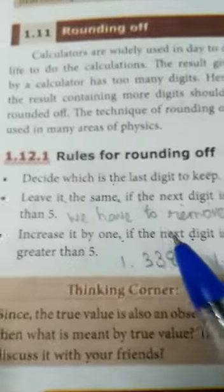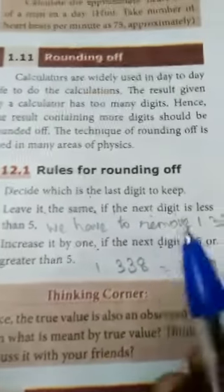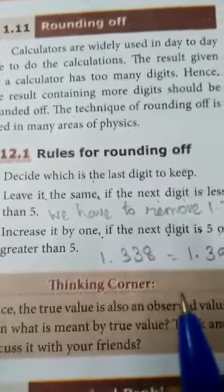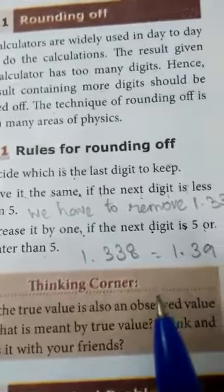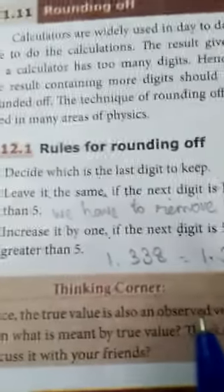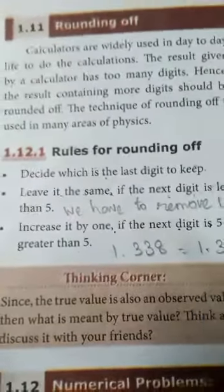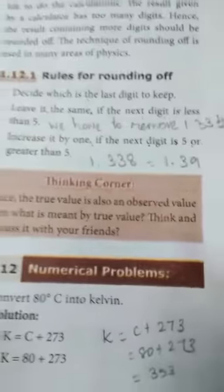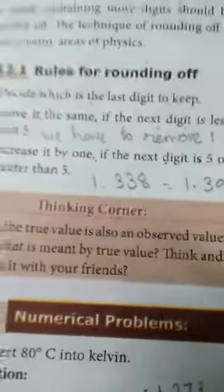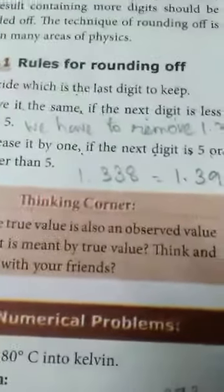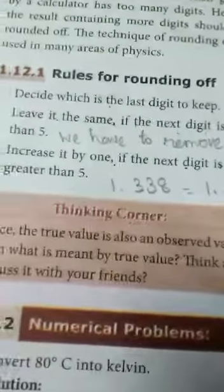I'll read the rules. Decide which is the last digit to keep. Leave it the same if the next digit is less than 5. Increase it by 1 if the next digit is 5 or greater than 5. Can you understand? I hope you understood. I think you studied rounding off in math. The same method only.